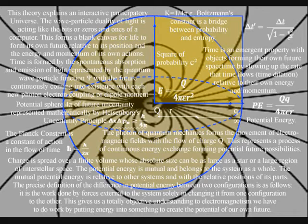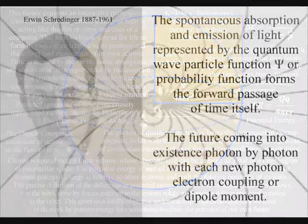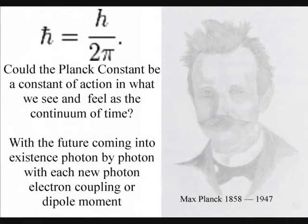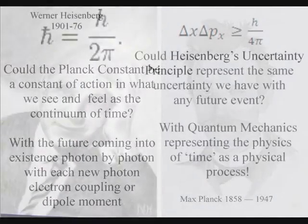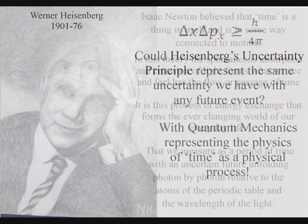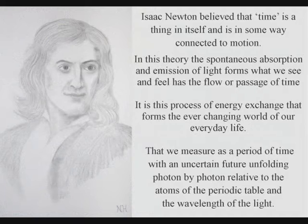In such a theory the mathematics of quantum mechanics represents the physics of time as a physical process, with classical physics representing processes over a period of time, as in Newton's differential equations.